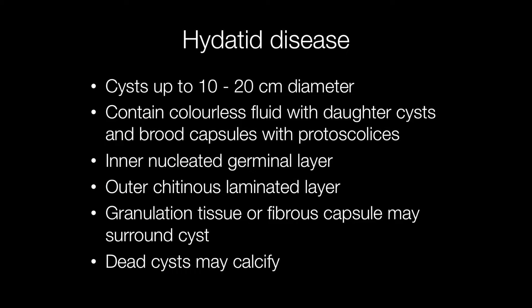Hydatid cysts are usually 10 to 20 cm in diameter, and sometimes up to around 30 cm. They contain colourless to pale yellow fluid, and within the fluid are daughter cysts, brood capsules and protoscolices. The structure of a Hydatid cyst consists of an inner nucleated germinal layer, which gives rise to protoscolices, daughter cysts and brood capsules. This layer is surrounded by an acellular chitinous laminated layer, which is itself surrounded by granulation tissue or a fibrous capsule. Over time, the cyst may die and then calcify.